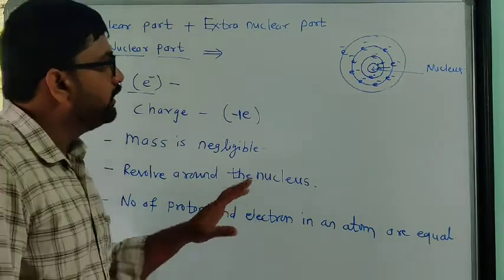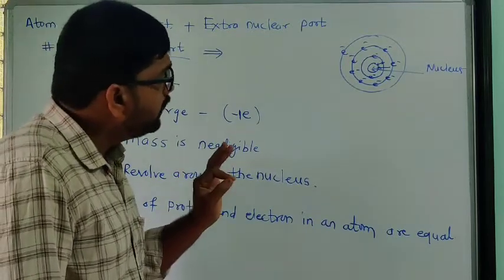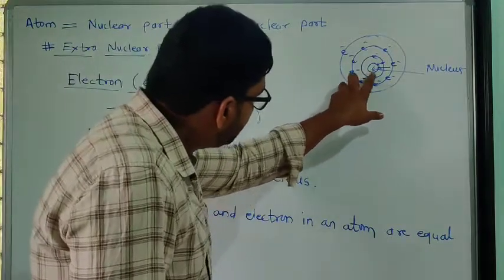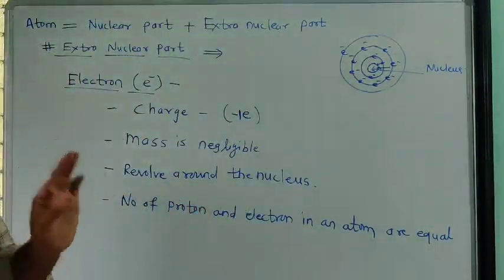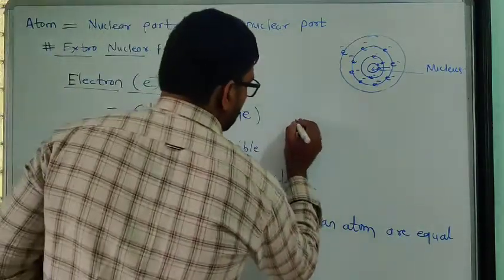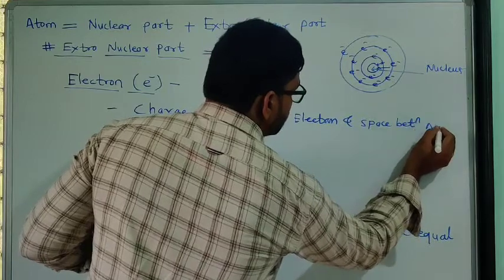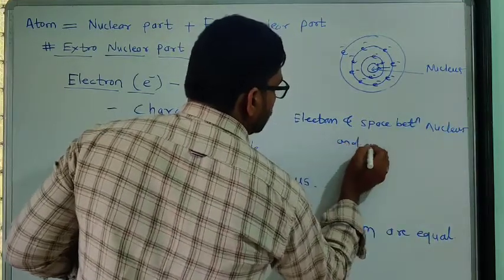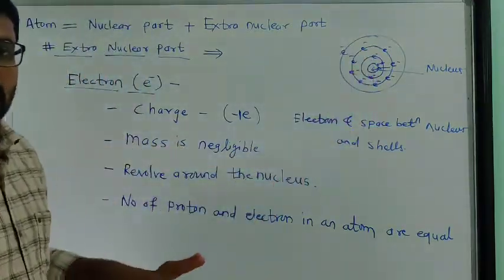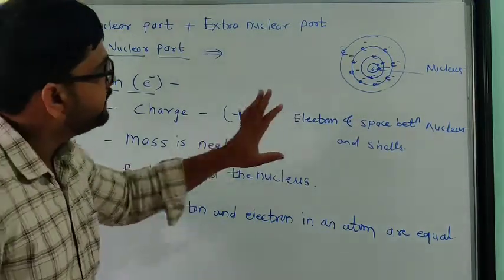All the electrons which are present outside the nucleus revolve around the nucleus in particular shells. The space between the nucleus and the shells - that much part is included in the extra nuclear part. 'Extra' means outside - the part of the atom which is present outside the nucleus is simply the extra nuclear part.